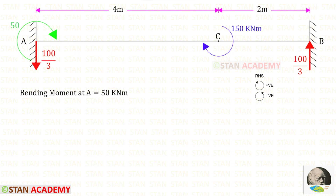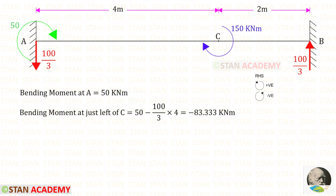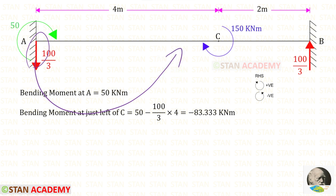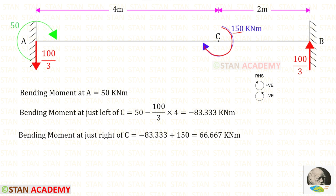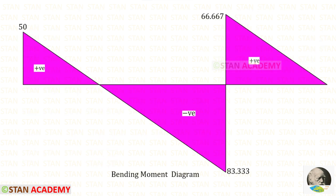Now let us find the bending moment values. At point A, MA acts clockwise so it will be positive. At just left of C, the moment MA is clockwise and the distance is 4, giving minus 83.333. At just right of C, we add the concentrated moment of 150, which acts clockwise and is applied as positive, giving 66.667. At point B, the bending moment is 0. Here you can see the bending moment diagram.